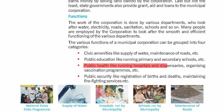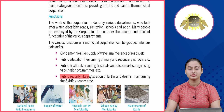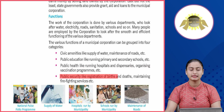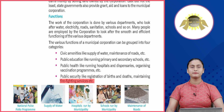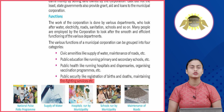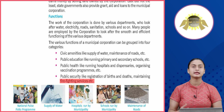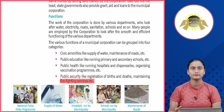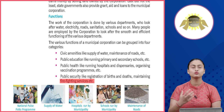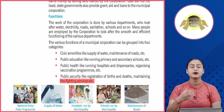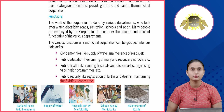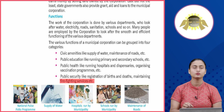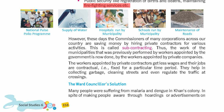The other two categories are public health — like running hospitals and dispensaries and organizing vaccination programs — and public security, like registration of births and deaths and maintaining fire-fighting services. Aapki jitni amenities hoti hain yeh chaar parts mein divide hain: pani ka supply, electricity supply, schools ki construction, hospitals aur dispensaries, aur janm ya mrityu ke records maintained karna.